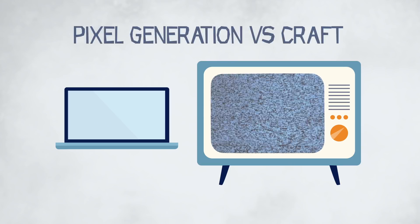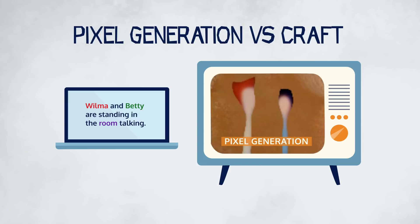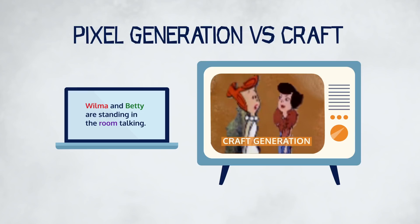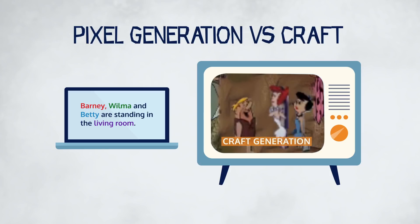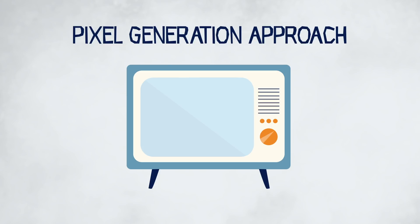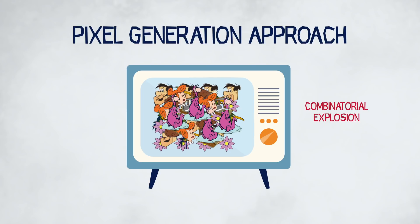Currently, most approaches to conditionally generating visual data from text rely on learning distributions directly from pixels in the training data. We experimented extensively with whole video generation from text using these types of models with and without adversarial losses, and found that our CRAFT model had better performance. These approaches have shown impressive results for aligned images of objects such as faces, birds, and flowers. However, they are often inadequate for addressing the combinatorial explosion of the image space that can arise from multiple characters and objects arranged in a large number of possible layouts.